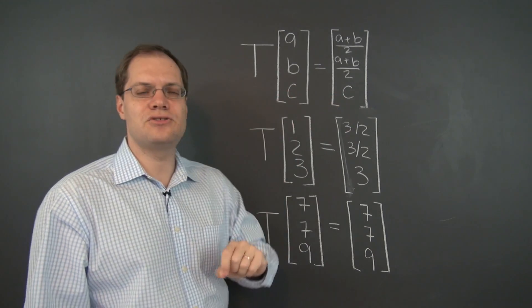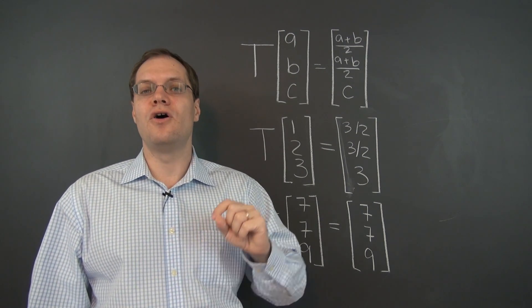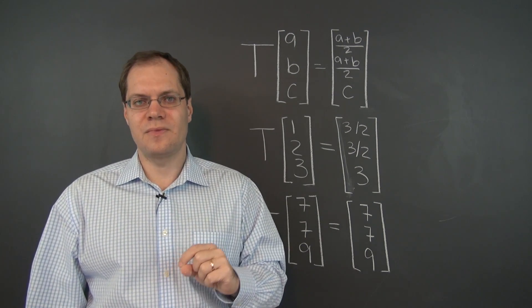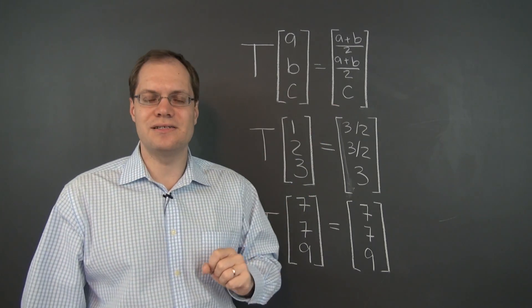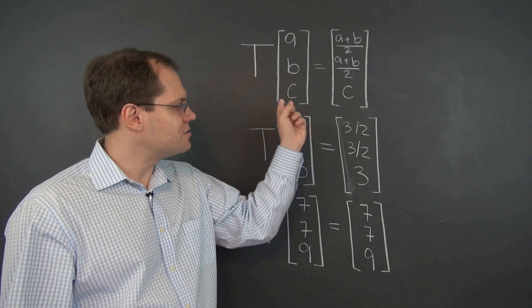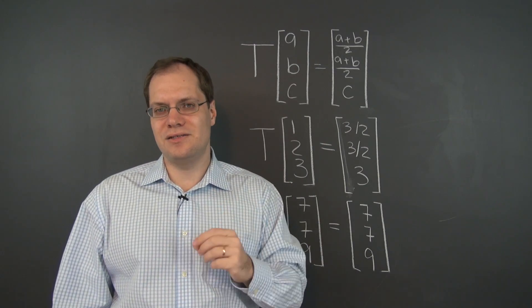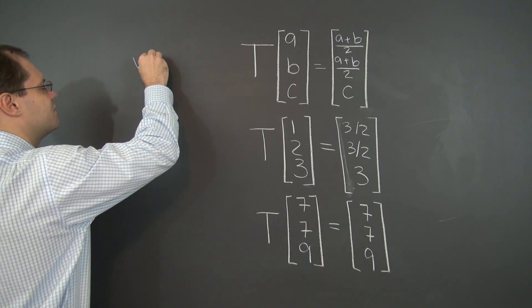So the fact that the last entry remains unchanged can be taken advantage of all on its own. And the corresponding eigenvector that takes advantage of this is 0, 0, 1. Because 0, 0, 1 under this transformation remains 0, 0, 1.